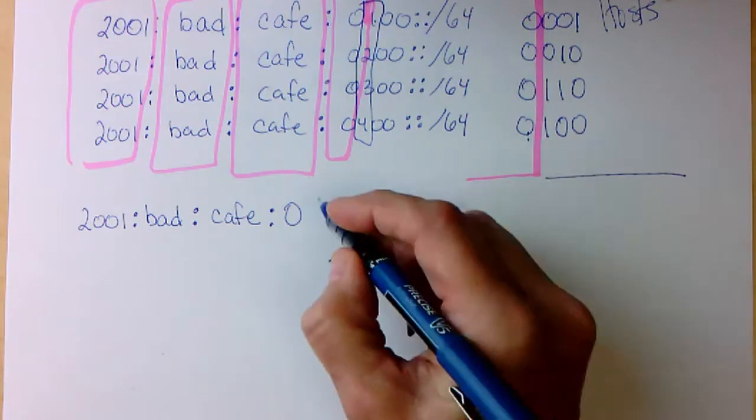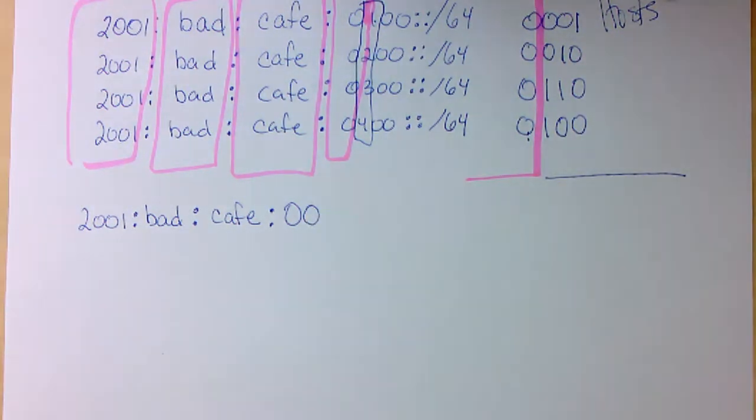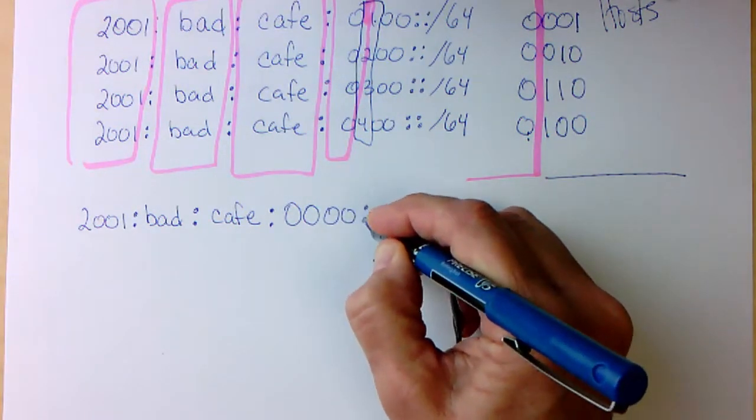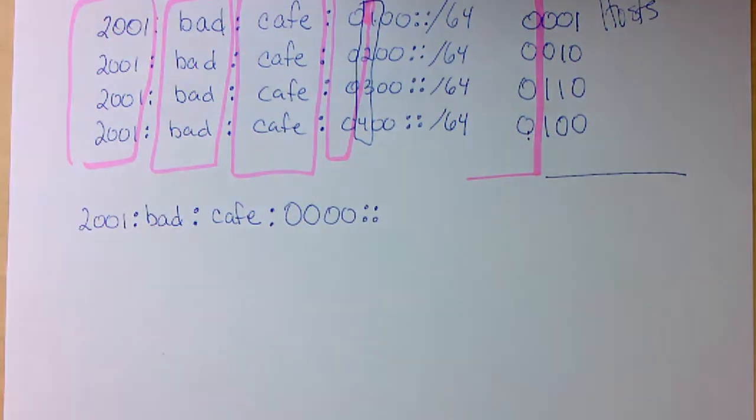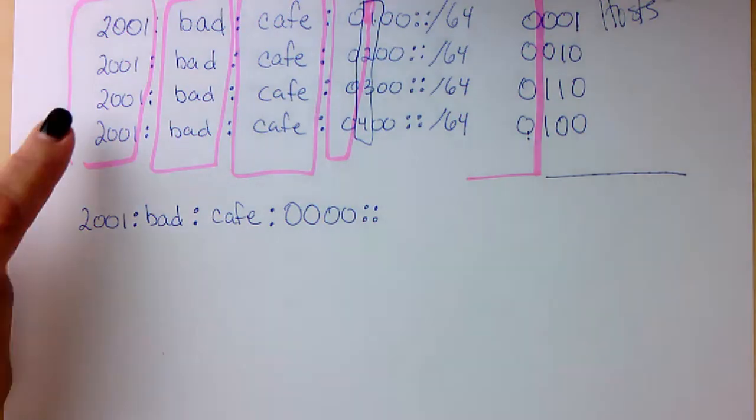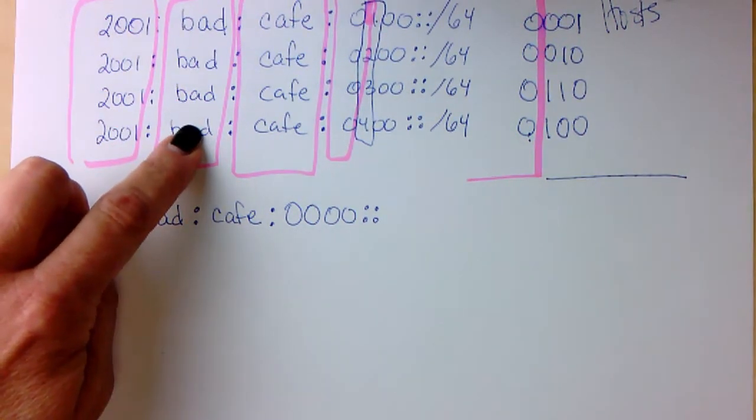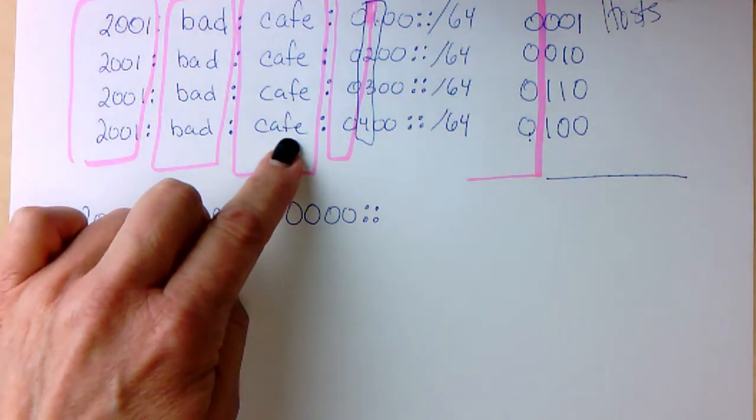I'm trying to figure out the summary network address. What's in common is the zero. So this value right here is going to be a zero. Zero zero colon colon colon colon. Now what do I have for my prefix length?